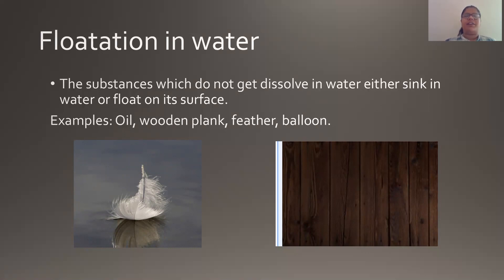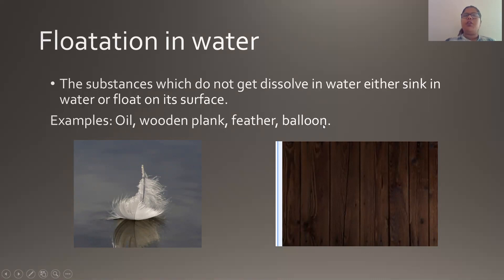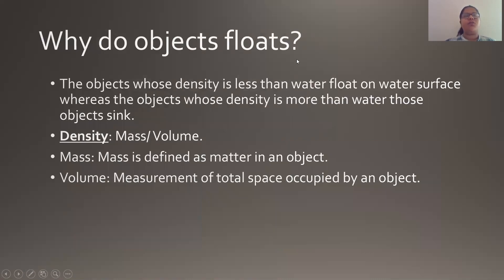When we took sand and tried to add it in water, the sand particles settled down at the bottom of the glass. But whereas when we took oil and tried to mix oil with water, the oil remains on the upper layer of the water — that means it floats on the water. Some substances have the property to float in water. Examples of such substances are oil, wooden plank, feather, and balloon. Now you would question: why do these objects float on water and why do some objects sink?